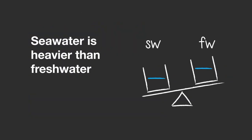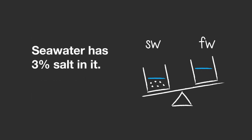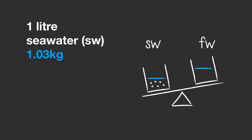Seawater is heavier than freshwater because it has salt in it. Seawater has about 3% salt in it, so it weighs about 3% more. 1 liter of seawater weighs 1.03 kilograms and 1 liter of freshwater only weighs 1 kilogram.